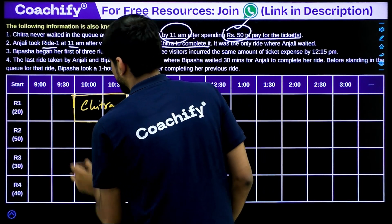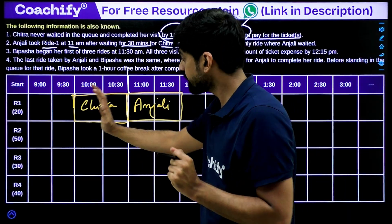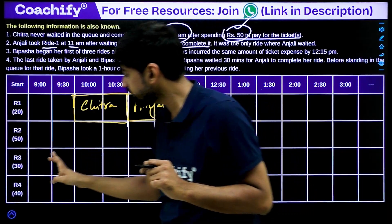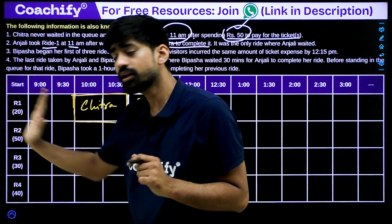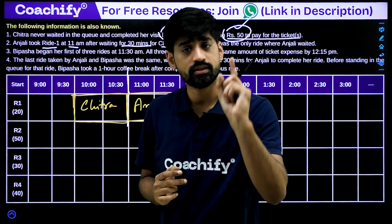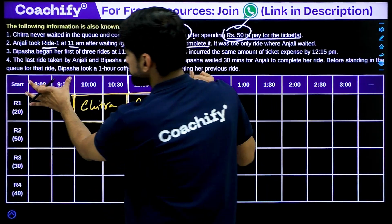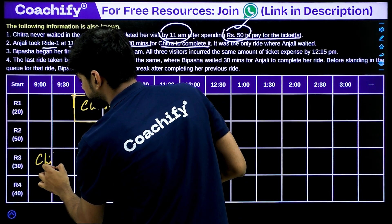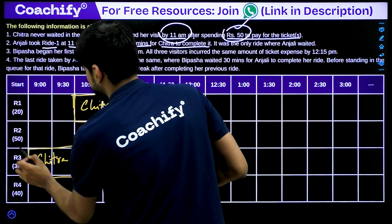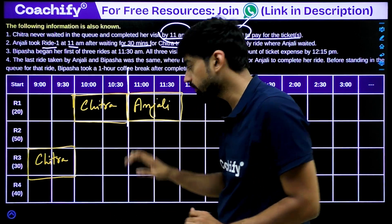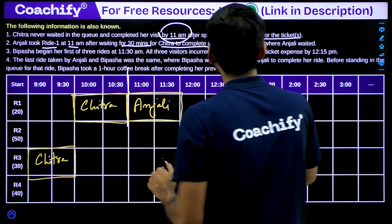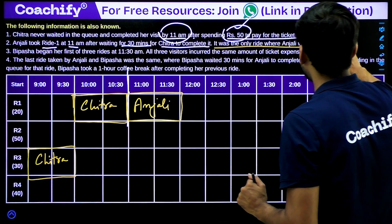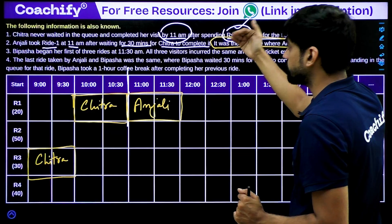So Chitra's schedule is: ride 3 from 9 to 10, then ride 1 from 10 to 11 — after which Chitra is out of the park. Anjali takes ride 1 starting at 11 a.m. and finishes at 12. One more important point: it was the only ride where Anjali waited — meaning Anjali never waits in a queue for any other ride after this.